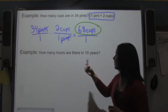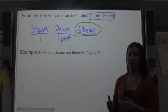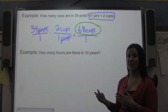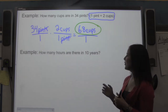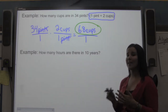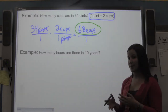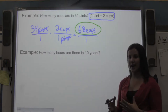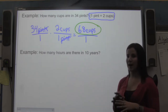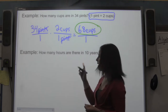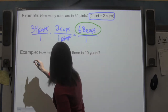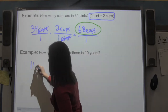Next example: how many hours are there in 10 years? This requires two steps. I don't know how many hours there are per year, but I know how many days there are per year and how many hours per day. So I'm going to do this as a two-step problem. I'll start with 10 years.